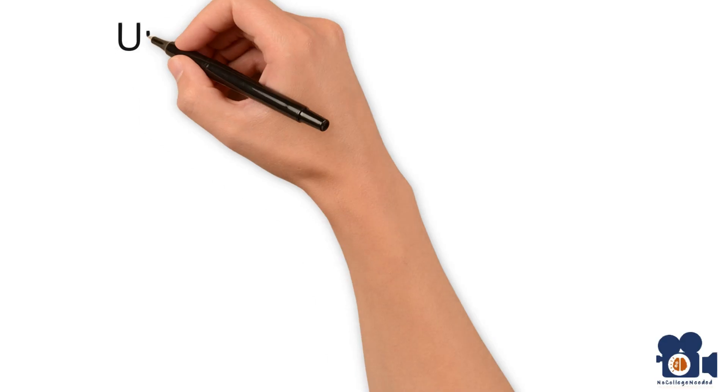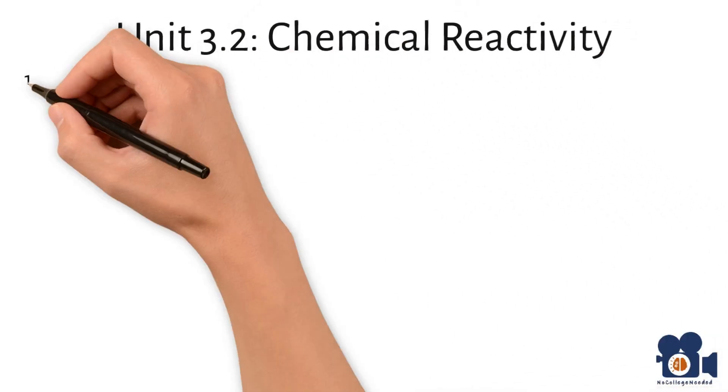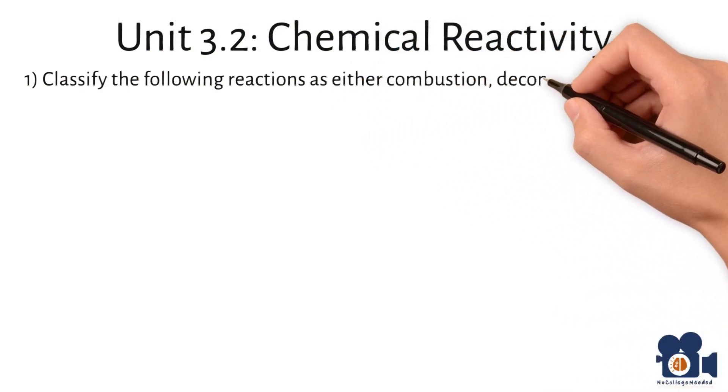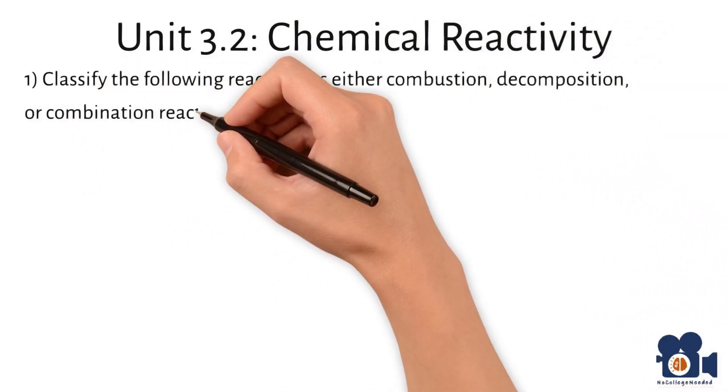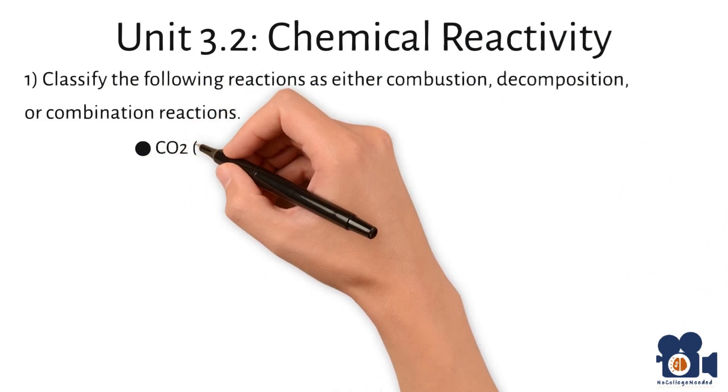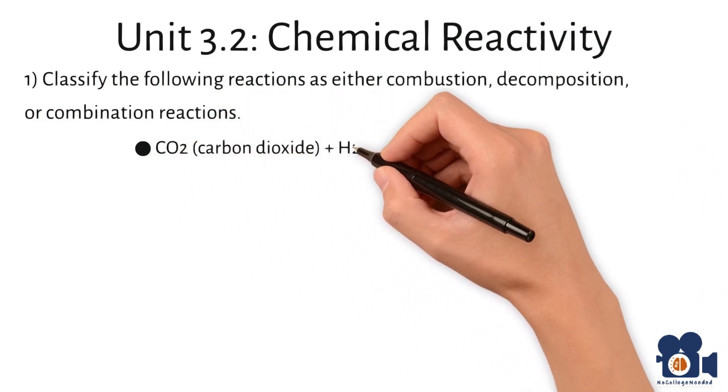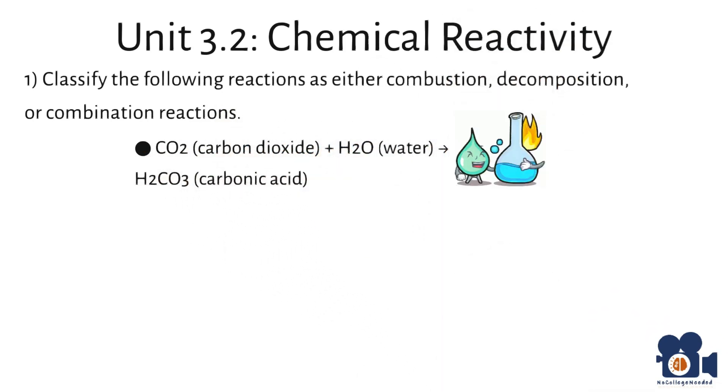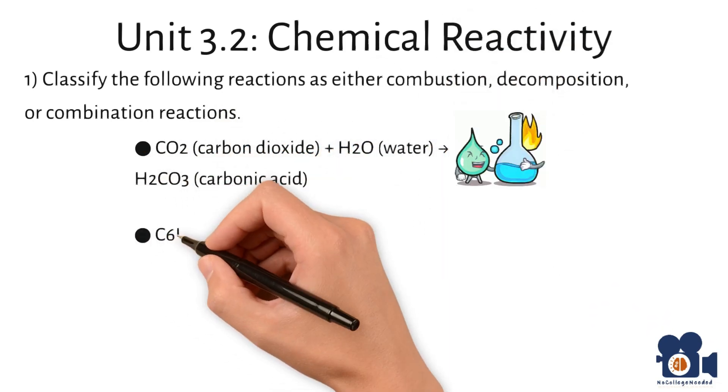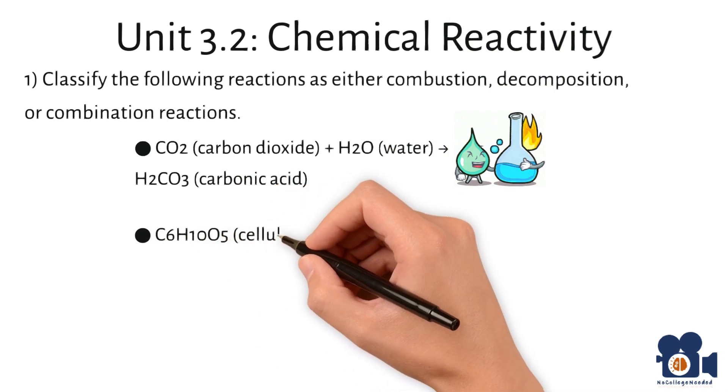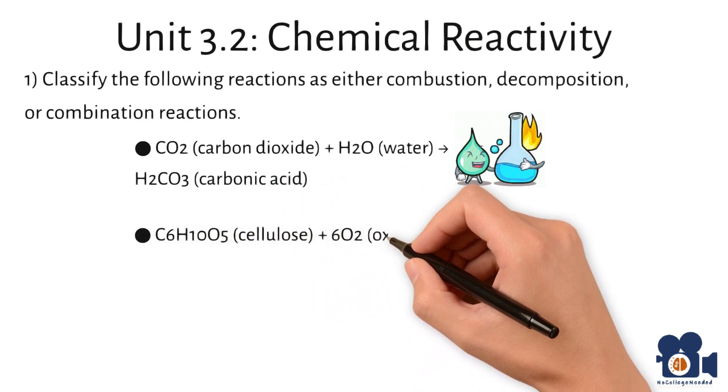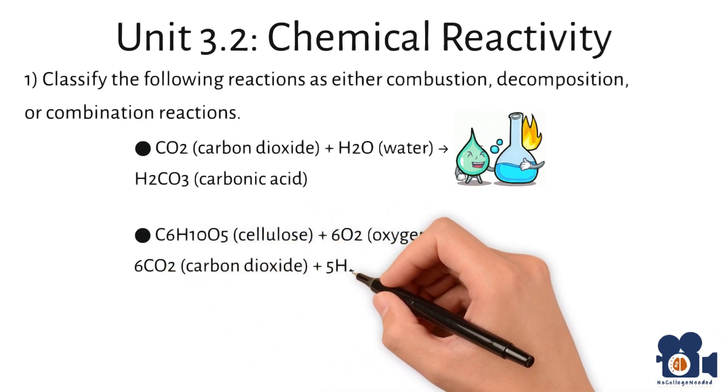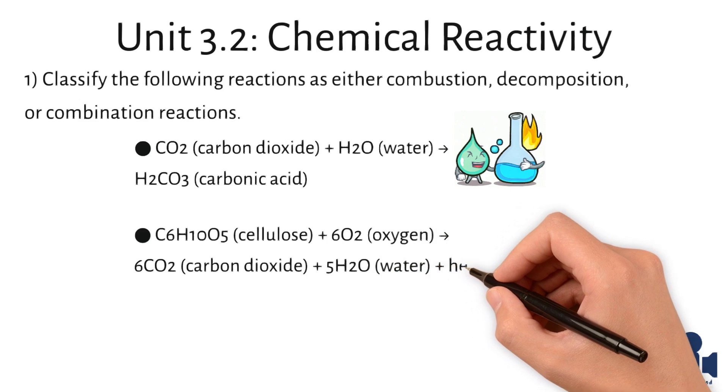Unit 3.2, Chemical Reactivity. Classify the following reactions as either combustion, decomposition, or combination reactions. CO2 plus H2O going to H2CO3. C6H10O5 plus 6O2 going to 6CO2 plus 5H2O plus heat.